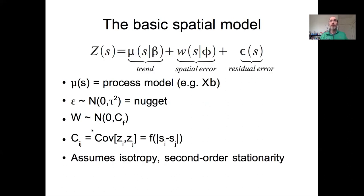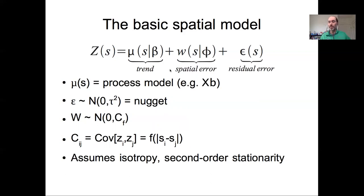In the basic form of a spatial model, we envision a response variable z at some location x predicted by what's here called the trend — which throughout the semester we've referred to as the process model. Our process model predicts the expected value of our process at some location s. That could be a constant mean, a linear model x-beta, a generalized linear model with a nonlinear link, or a broader class of nonlinear models.